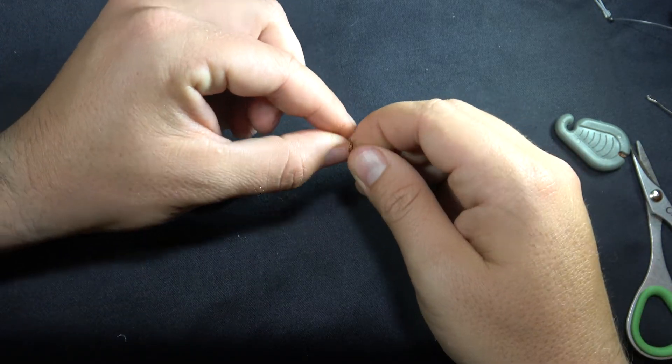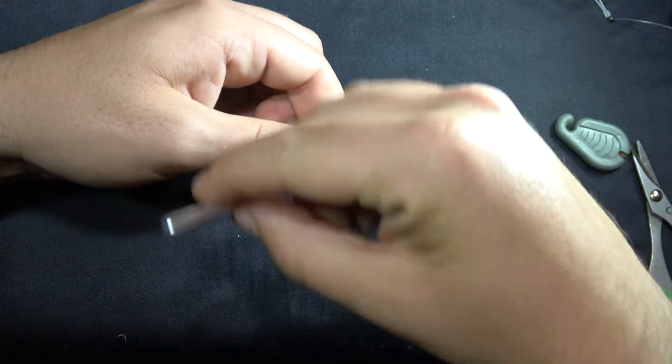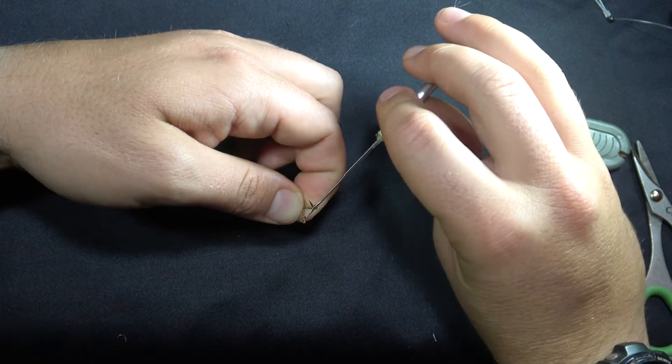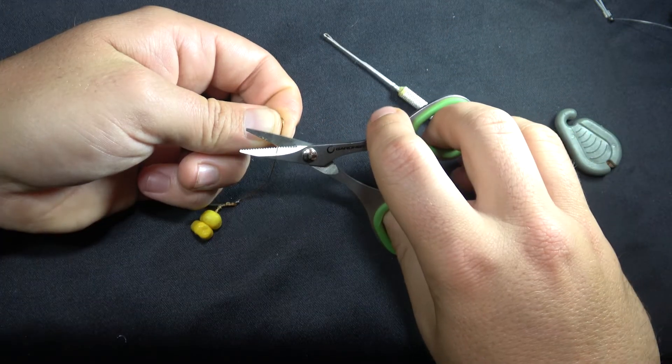Once you've tied your knotless knot, go to the other end of the braid and tie a figure of eight loop knot. This time making the loop quite big. Cut the tail end.